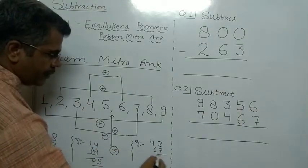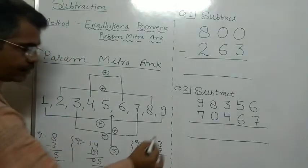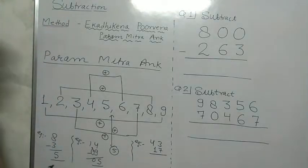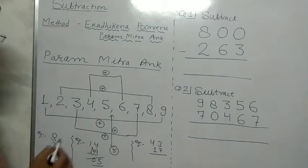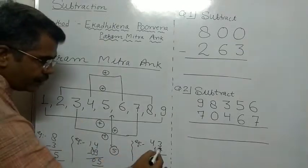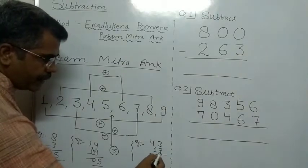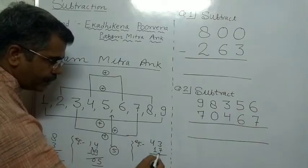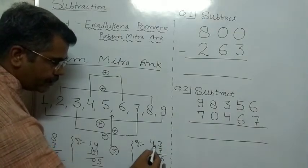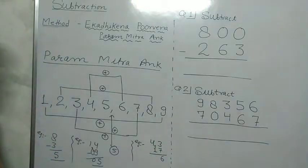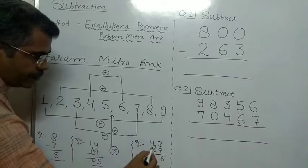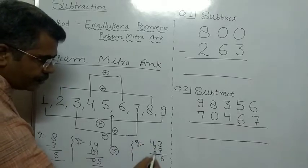Here 7 cannot be subtracted from 3, so we use the Ekatecane Purvend Pramikkar Ankh method. Pramikkar Ankh of 7 is 3, and we add it to the upper digit: 3 plus 3 is 6. We write 6 here, and we use Ekatecane. This digit is 2, so we subtract: 4 minus 2, we get 2.